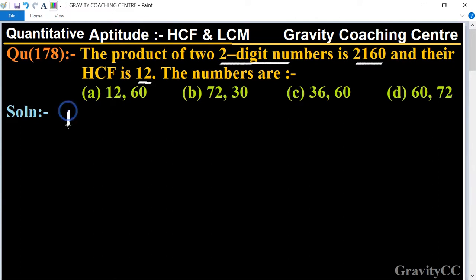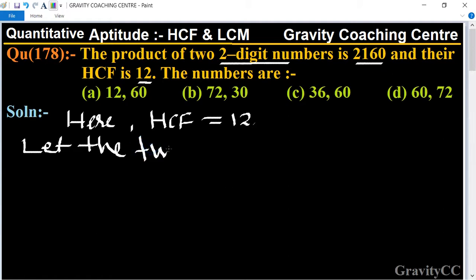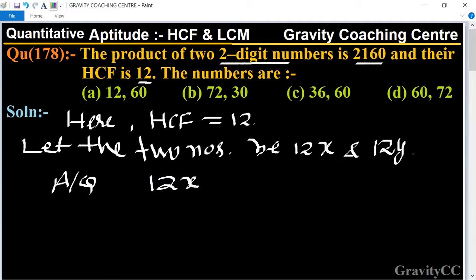Here HCF is given as 12. Let the two numbers be 12x and 12y. According to the question, their product is 2160, so 12x times 12y equals 2160.